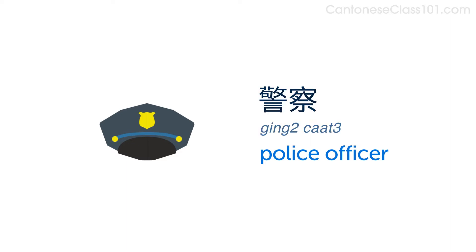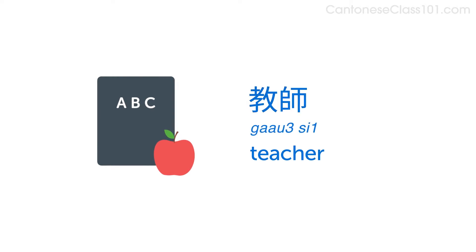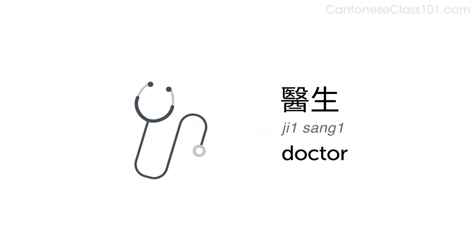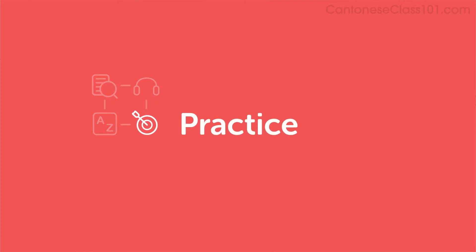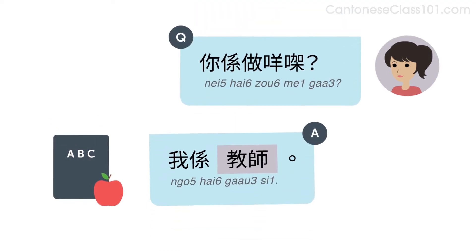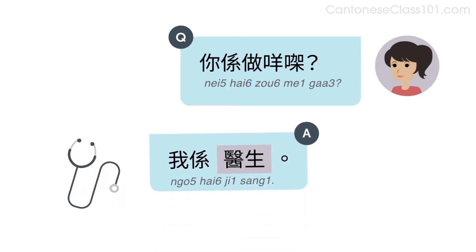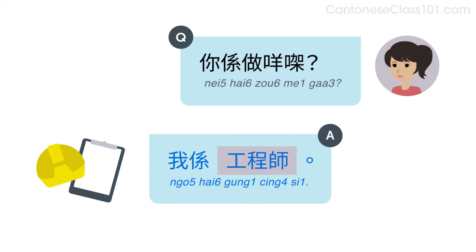Here are a few more professions you can use with the same pattern. Police officer 警察. Engineer 工程師. Now, listen to some examples. 你係做咩嘅? 我係教師. 你係做咩嘅? 我係醫生. 你係做咩嘅? 我係工程師.